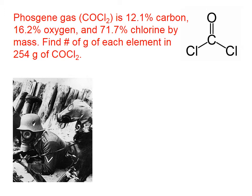Let's do an example problem. Phosgene gas, which has the formula COCl2, is 12.1% carbon, 16.2% oxygen, and 71.7% chlorine by mass. Find the number of grams of each element in 254 grams of phosgene.